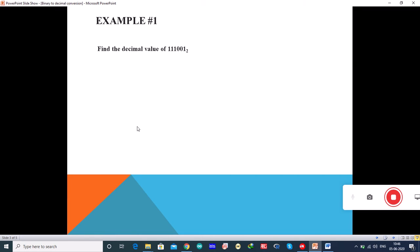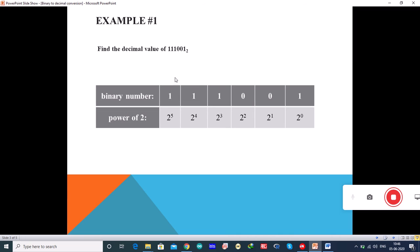Let us consider an example. Let us find the value of 11001 base 2. This is how you can convert. You have 11001 and this is in 2 power 0 space, 2 power 1, 2 power 2, 2 power 3, 2 power 4, 2 power 5 and so on. It can be written as 1 into 2 power 5 plus 1 into 2 power 4 plus 1 into 2 power 3 plus 0 into 2 power 2 plus 0 into 2 power 1 plus 1 into 2 power 0.